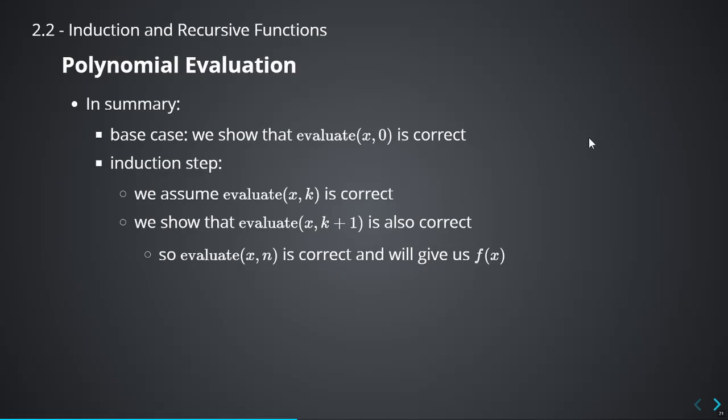In summary: we have a statement we want to prove, we show it's correct when i equals 0, and then in the induction step we assume evaluate(x, k) is correct and show that evaluate(x, k+1) is also correct. That means evaluate(x, 0) is correct, evaluate(x, 1) is correct, evaluate(x, 2) is correct, and most importantly evaluate(x, n) is correct and gives us f(x). We're not claiming this works for every possible value of i beyond n — the limit is the degree of the polynomial — but for valid input n, it will work. That's the end of that proof.